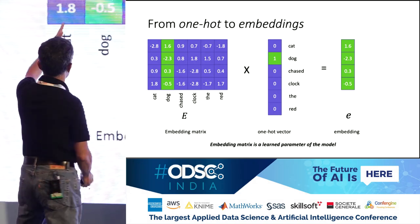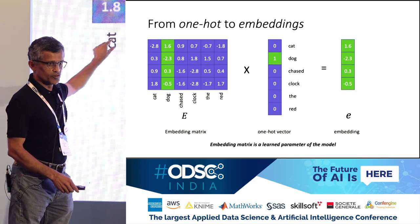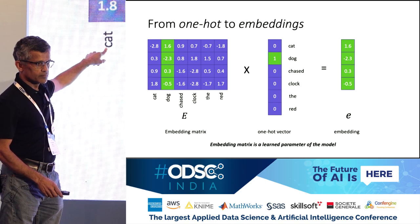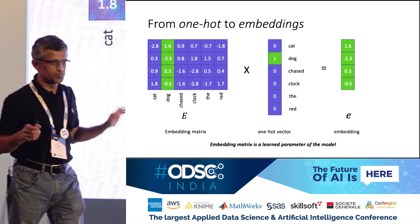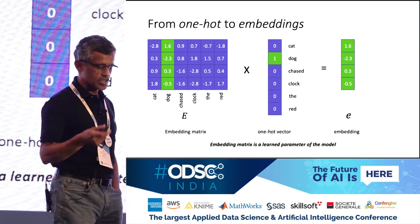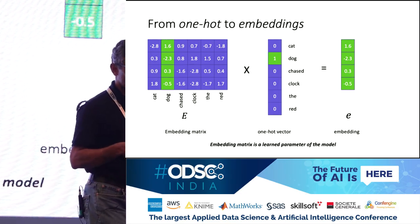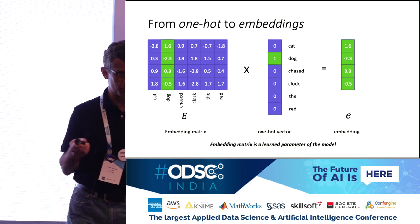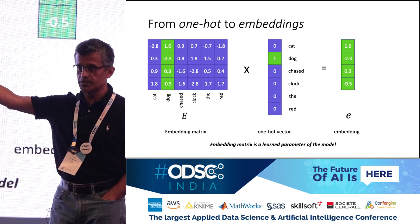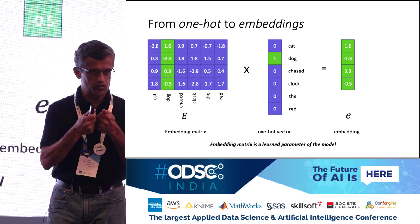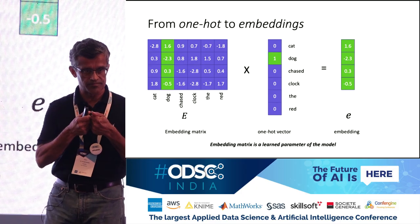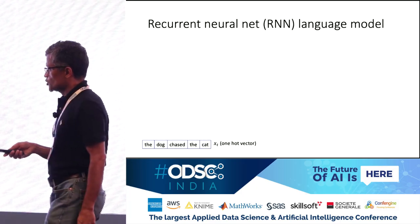Each column of the embedding matrix represents the embedding vector for that specific word. The dimensions don't have specific meanings — in the example I gave, the dimensions meant 'is it a rodent, is it a herbivore, is it a small animal,' but in practice the components of these vectors don't have named meanings. In this four-dimensional space, if two vectors are close together, those two words probably mean similar things.